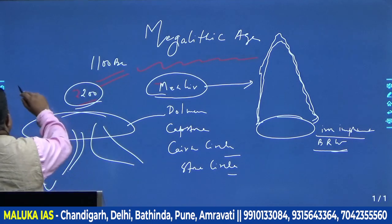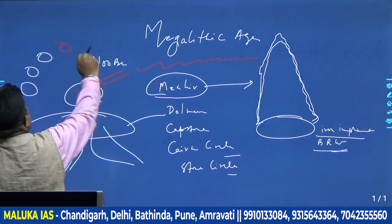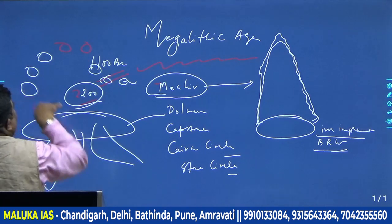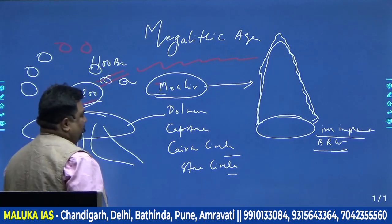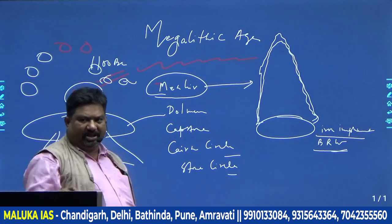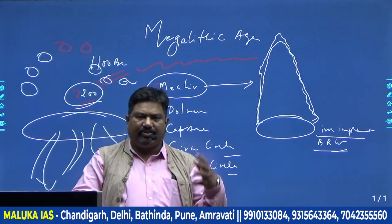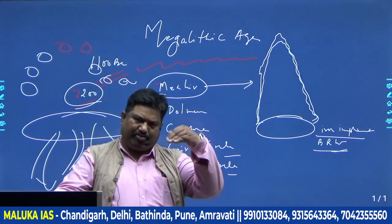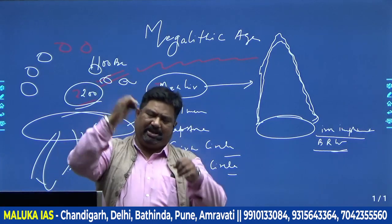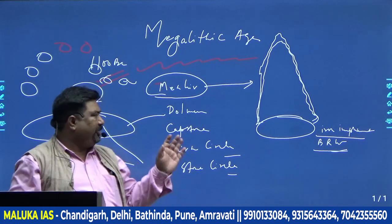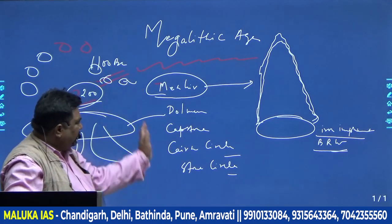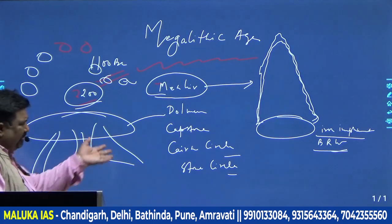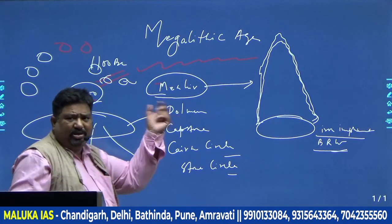A capstone looks like stones placed on top of each other forming a cap shape, and again the burial is underneath — that is called a capstone. Similarly, a stone circle involves placing a circle of stones around a pit that is dug. In this way, different structures exist during the Megalithic Age. What we derive is that we don't have any buildings, any structure, or any literature.